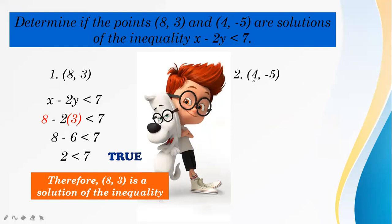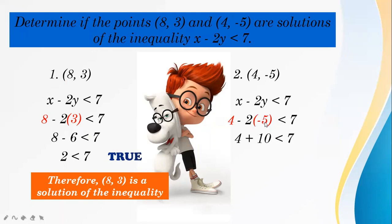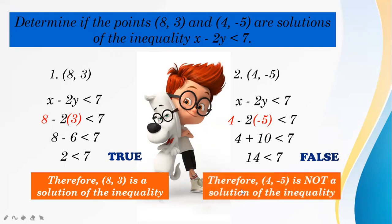For (4, -5): substituting x equals 4 and y equals -5 gives 4 minus 2 times negative 5 less than 7. Negative 2 times negative 5 equals 10, so 4 plus 10 gives 14 less than 7. The statement is false because 14 is greater than 7. Therefore, (4, -5) is not a solution of the inequality. So (8, 3) is the solution.